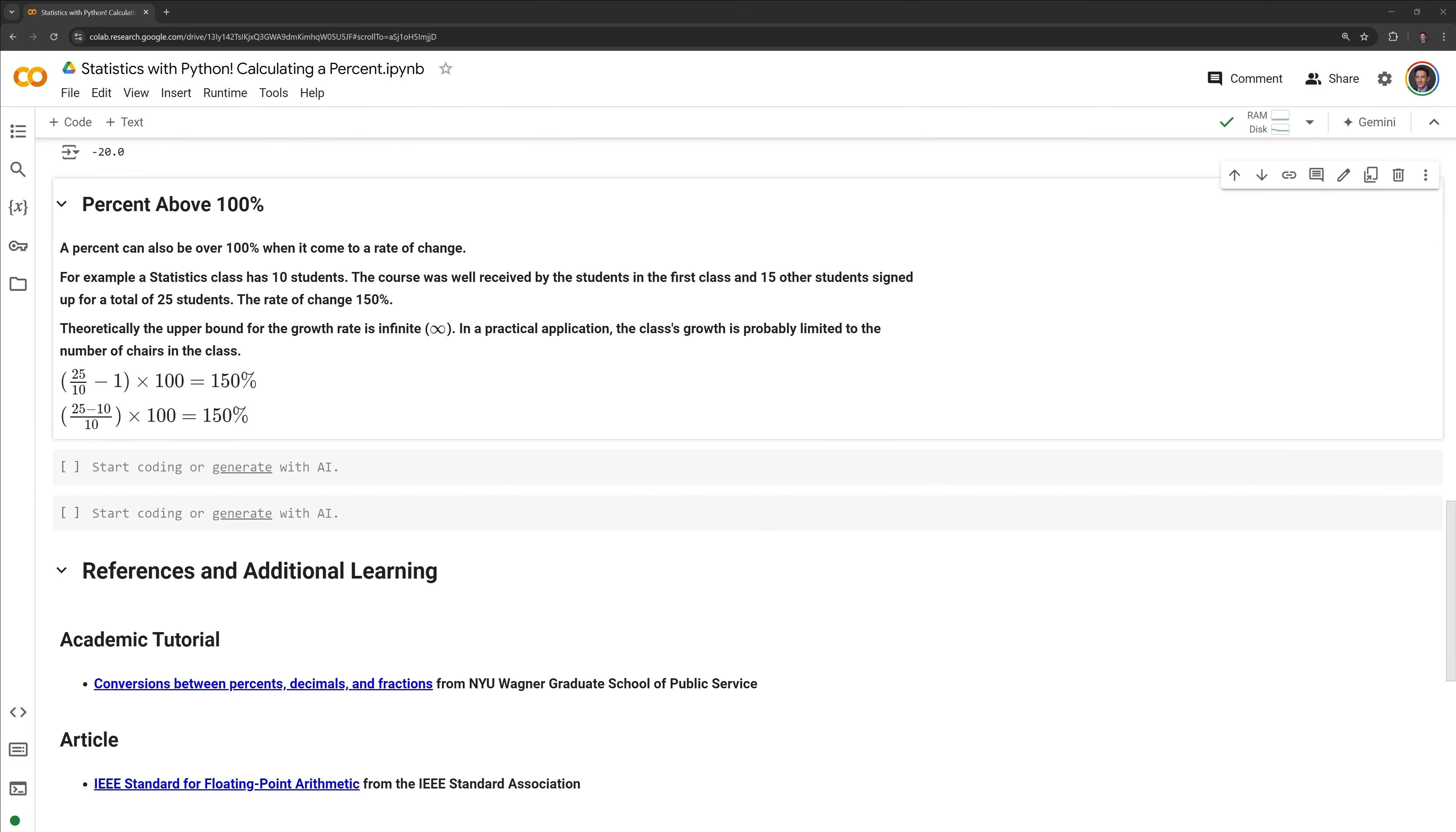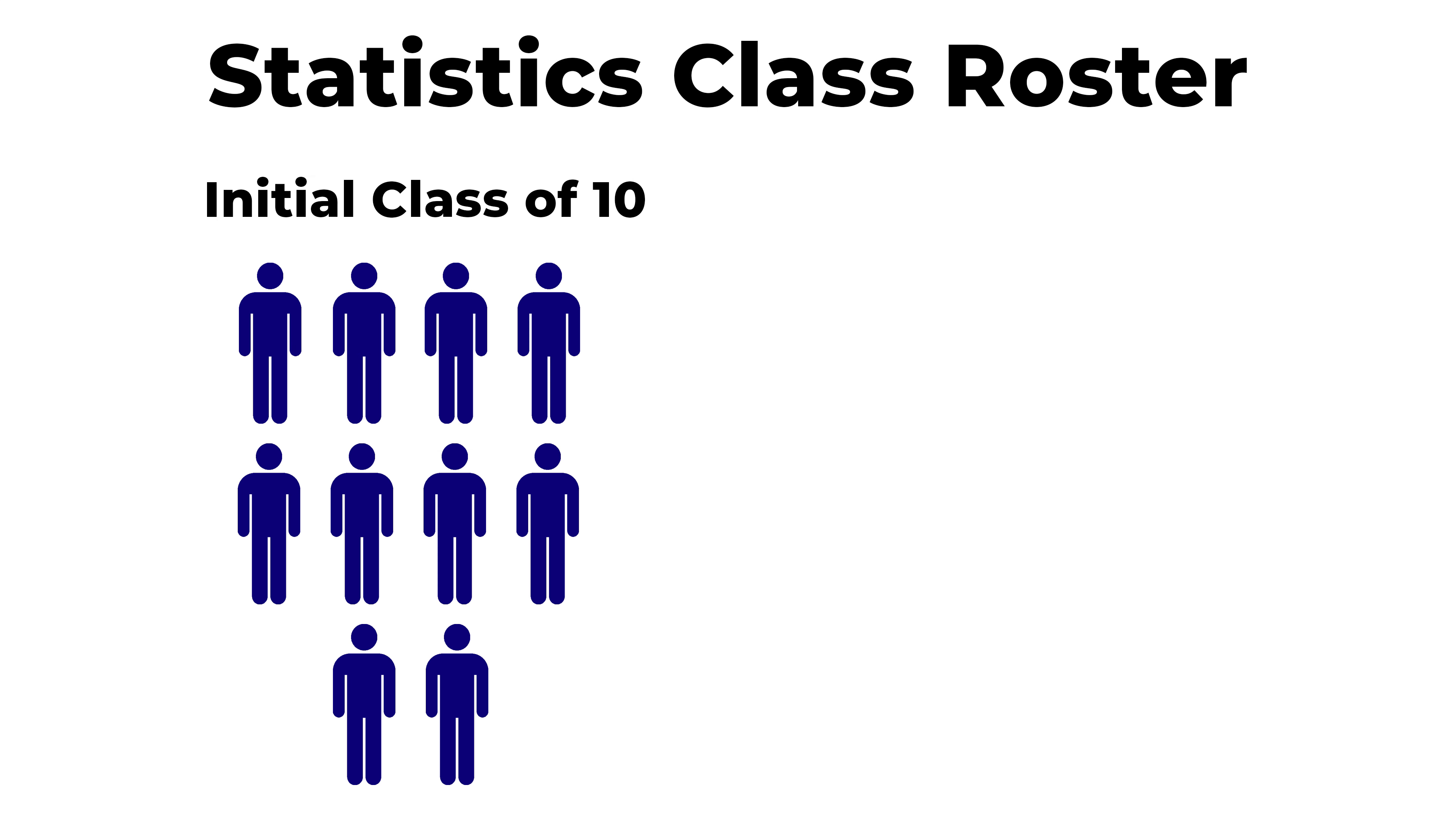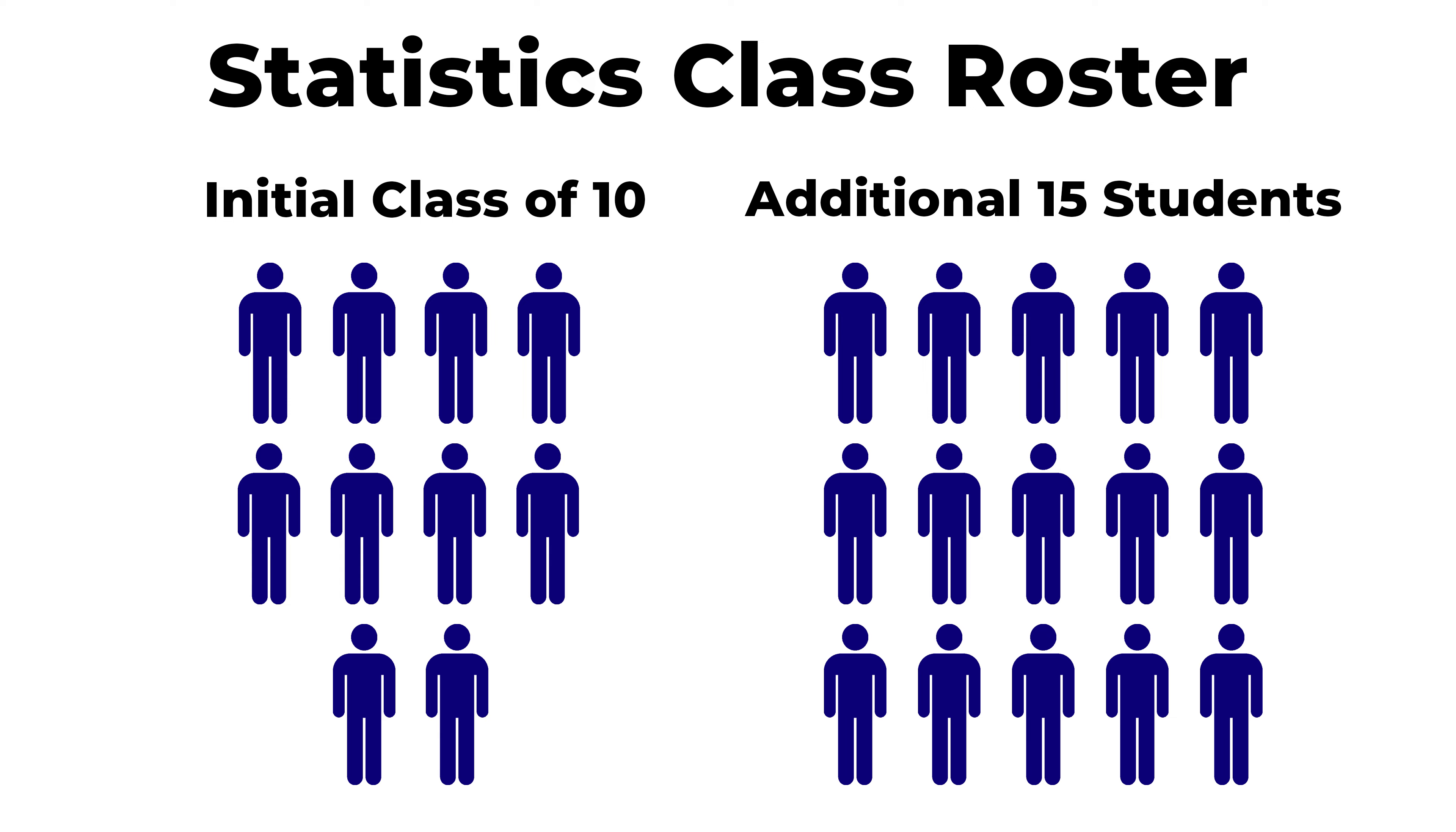There are also situations where a percent can be above 100 percent when it comes to a rate of change. For example, a statistics class has 10 students. The course was well received by the students in the first class, and 15 other students signed up for a total of 25 students. The rate of change is 150 percent.